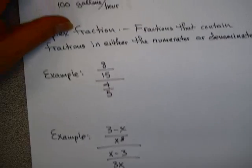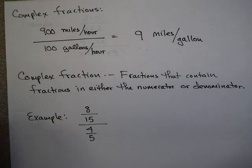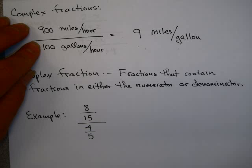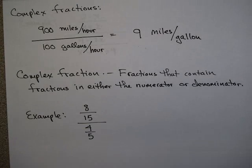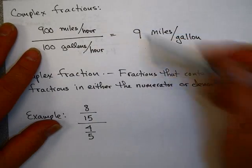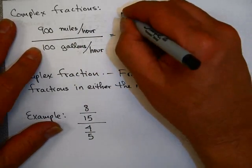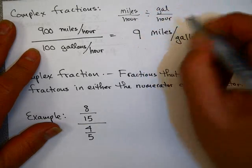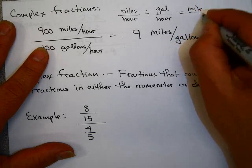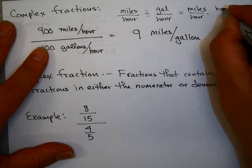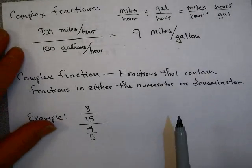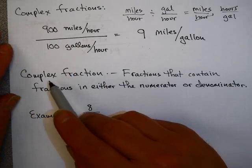Let's look at some applications — the idea of complex fractions. Suppose you're working for NASA and you're firing a rocket going 900 miles per hour, and it uses 100 gallons per hour of fuel. Well, 900 divided by 100 is 9. What's miles per hour divided by gallons per hour? Using the idea of multiplying by the reciprocal, you have miles per hour times hours per gallon. The hours cancel, and you end up with miles per gallon.